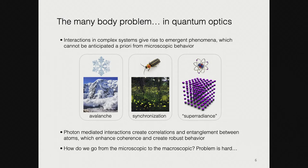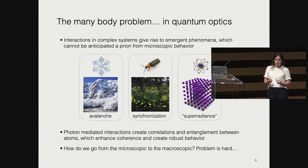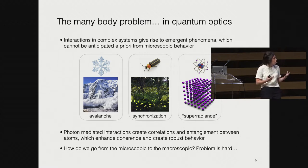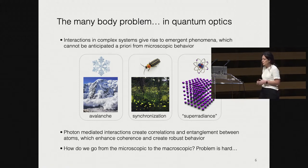Today I'm going to be talking about a many-body phenomenon in quantum optics: Dicke superradiance. Here we have photon-mediated interactions between atoms that give rise to synchronization and to the emission of photons in an avalanche. I'm interested in this problem because here it is dissipation that drives entanglement and correlations between the atoms, develops macroscopic coherence in the system, and gives rise to robust behavior. The big question is how we go from the microscopic understanding — how a single atom interacts with light — to predicting macroscopic behavior. This is hard in extended systems, but we have come to some understanding in ordered arrays.